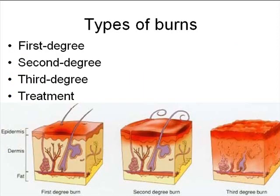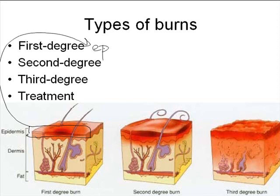I want to talk for a minute about different types of burns of the skin. This is a way that skin can become damaged if it's exposed to excessive heat. There are different types or degrees of burn depending on which portions of the integument become involved or damaged during the burn. First-degree burns, by definition, are those burns that only involve destruction of the epidermis. These tend to be painful because we have receptors in the epidermis and the dermis that perceive the damage to the tissue.